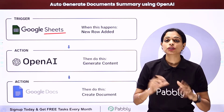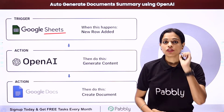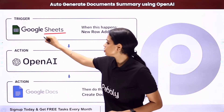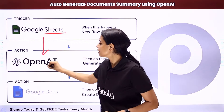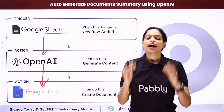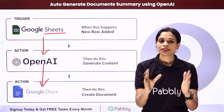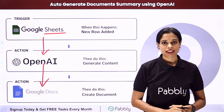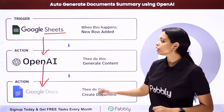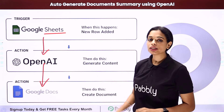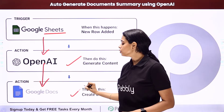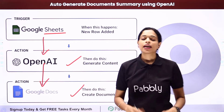Now how can you do that? For this you will have to integrate three applications: Google Sheets with OpenAI and Google Docs, and the same can be done using Pabbly Connect software. Here your trigger application would be Google Sheets, and your action applications would be OpenAI and Google Docs.